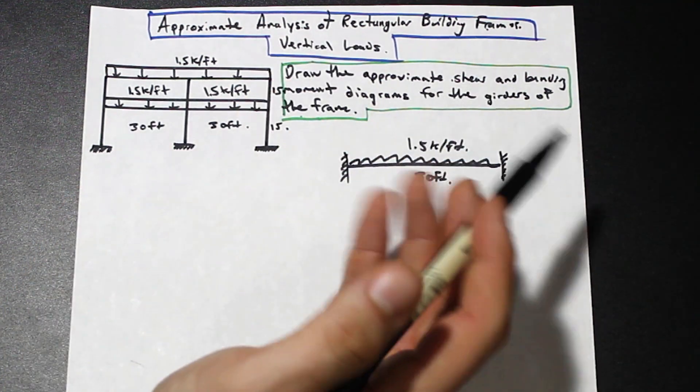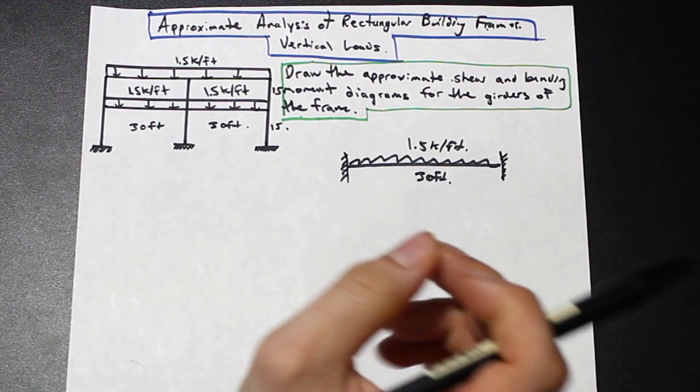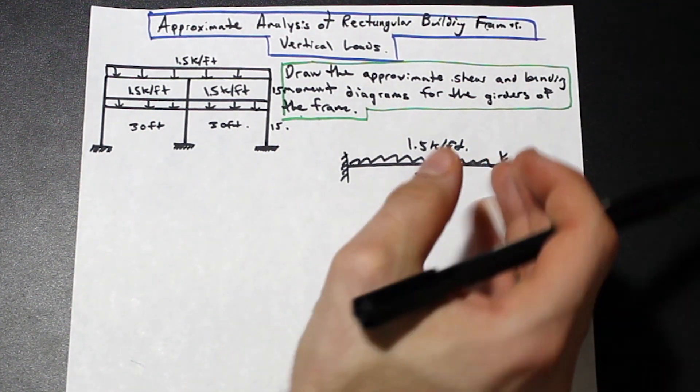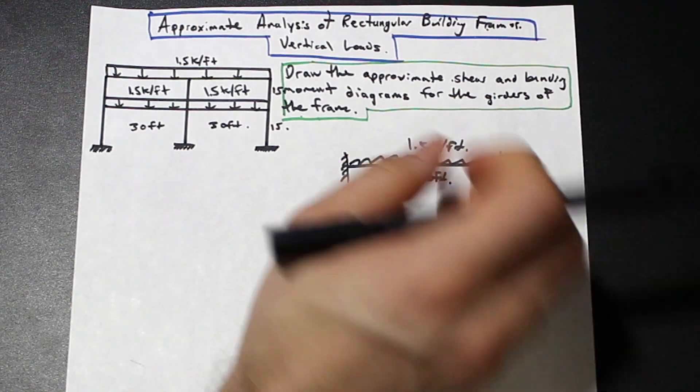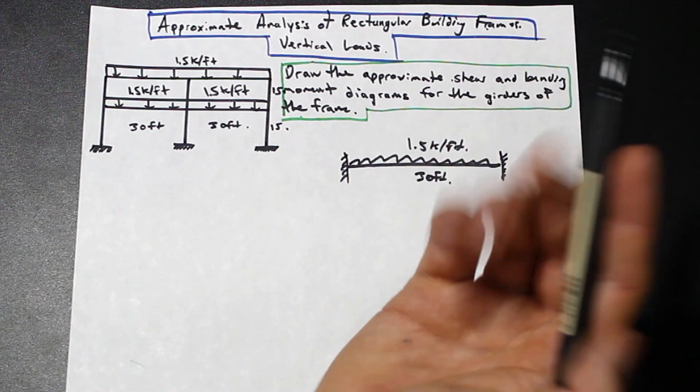But what it involves doing is it involves taking the girder and placing roller support and a pin support. So essentially making a smaller simply supported beam within each girder, therefore rendering the structure determinate.